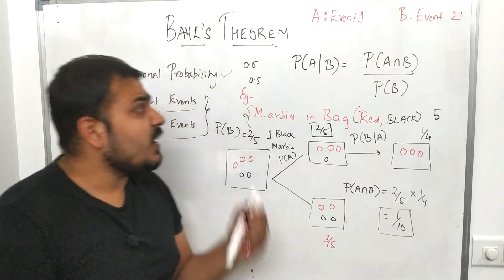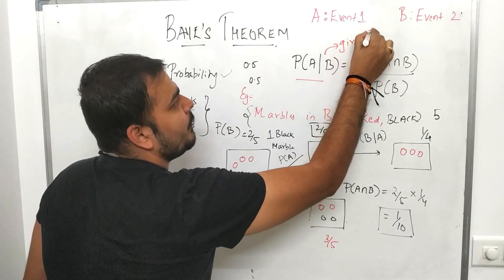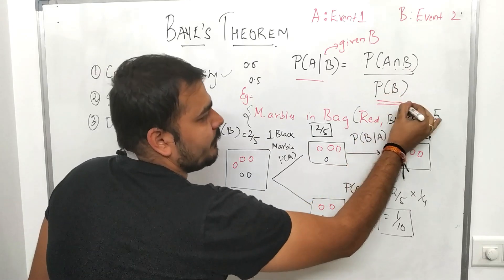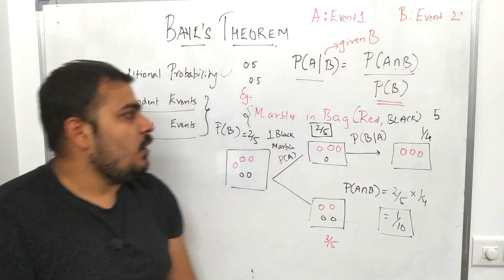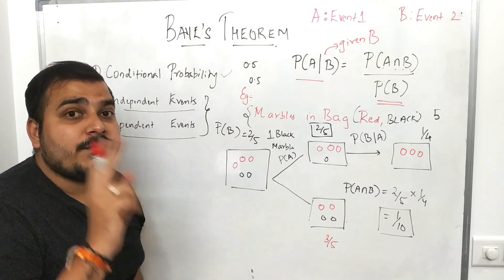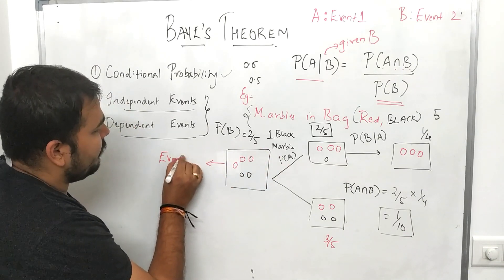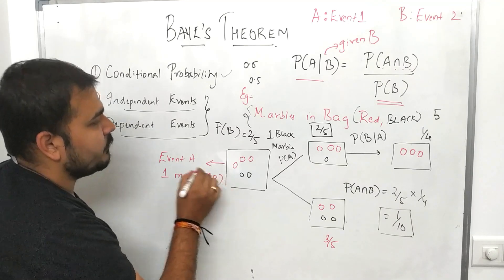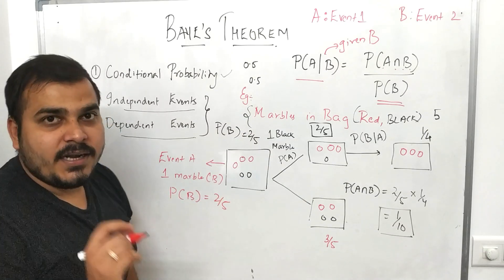Now let's understand conditional probability. The formula is: probability of A given B equals probability of A intersection B divided by probability of B. Here A and B are two events. Using the same marble example, in event A I pick up one black marble, and the probability of this is two by five.